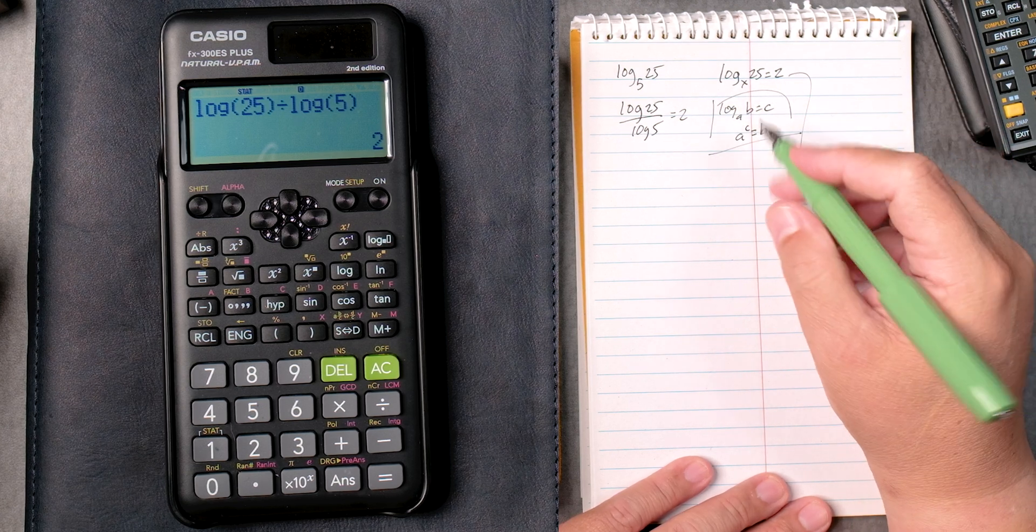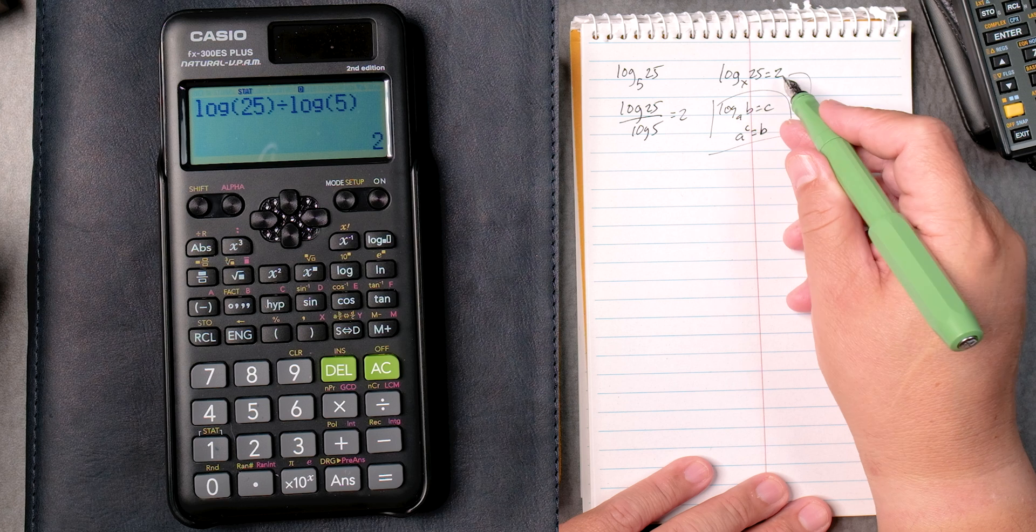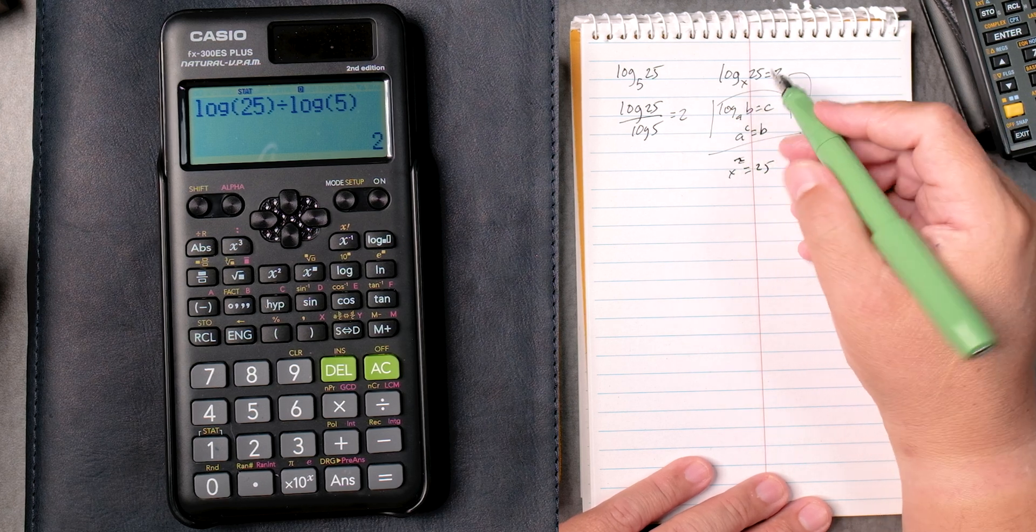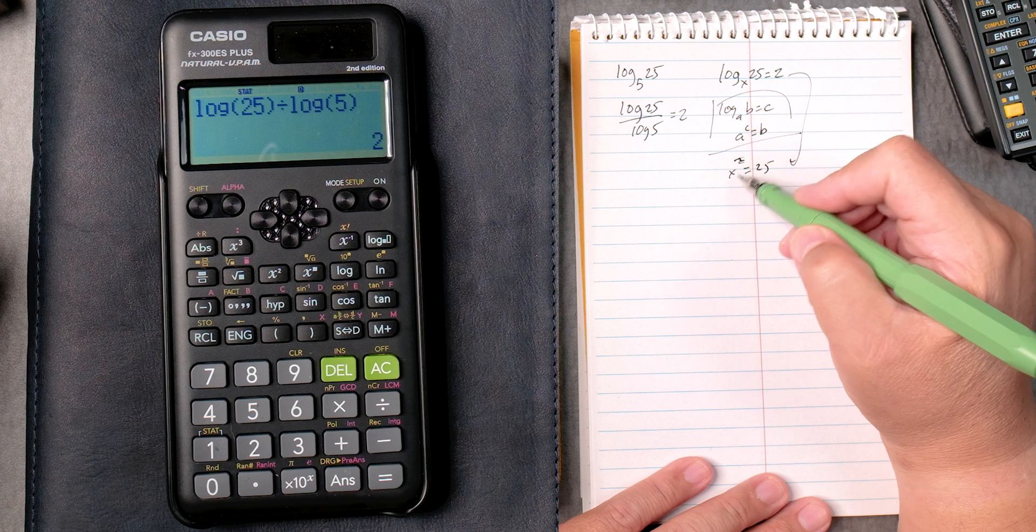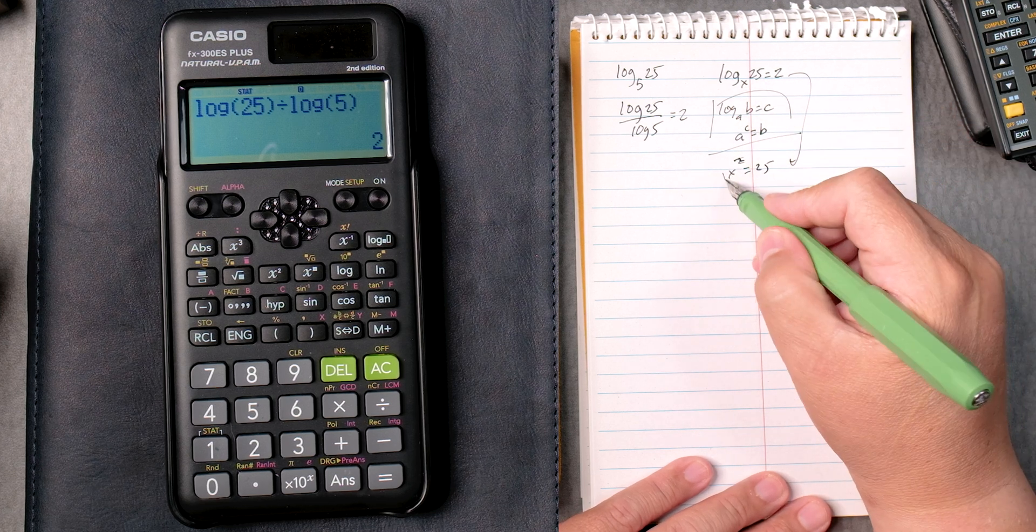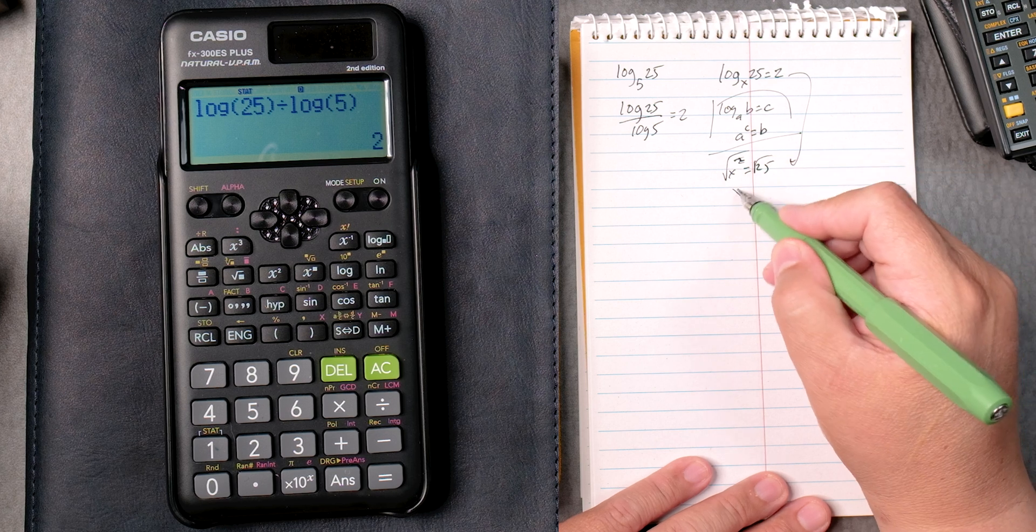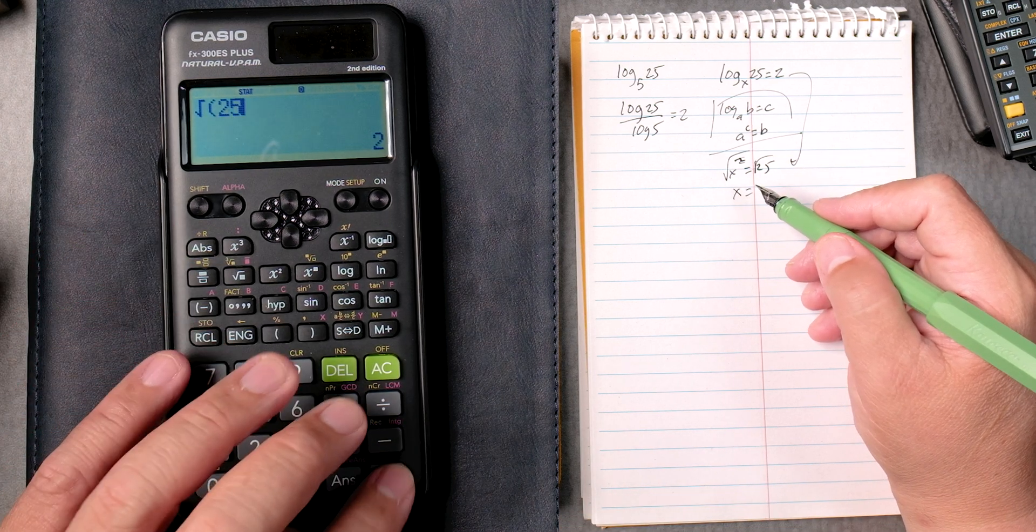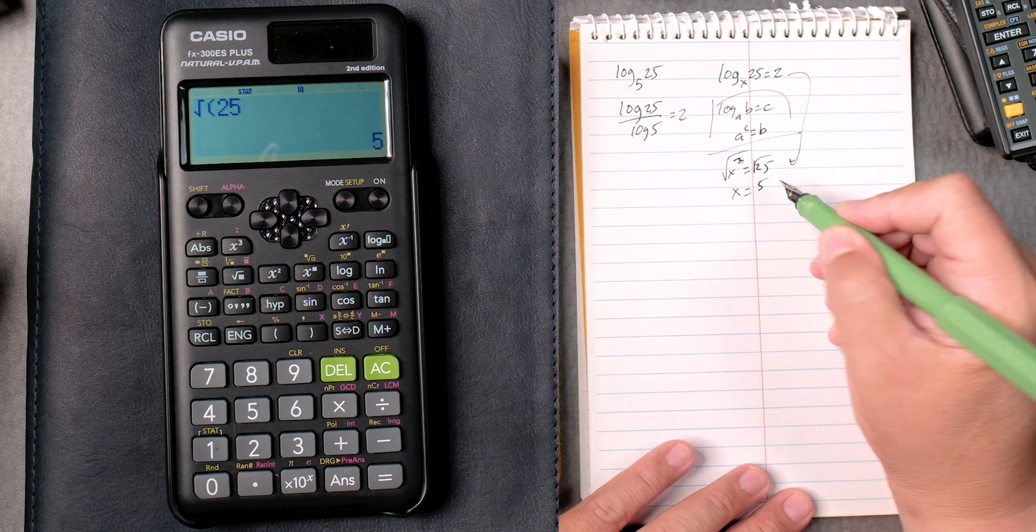We can apply that to this, x squared equals 25. So this x and 2, they're joined that way, and then equals 25. Take the square root on both sides, x equals the square root of 25. Square root of 25 equals 5. Perfect.